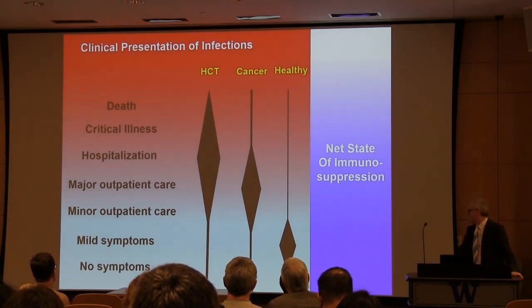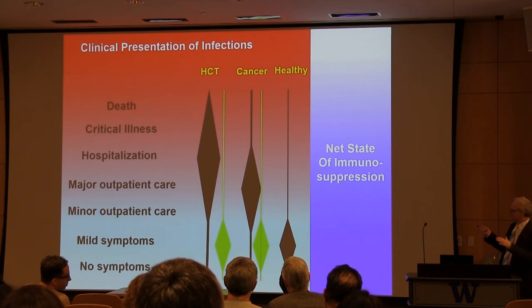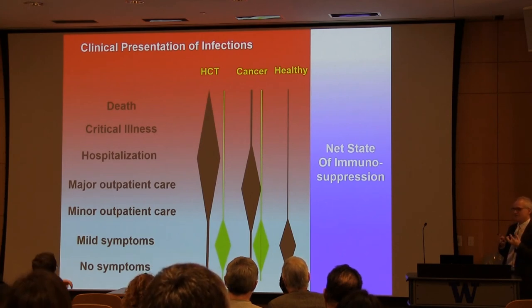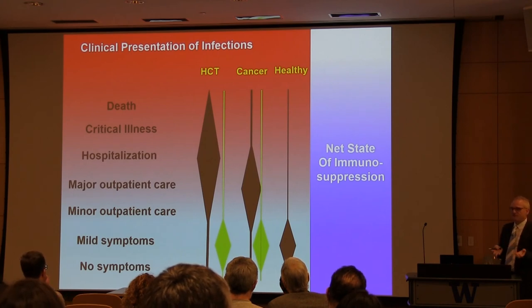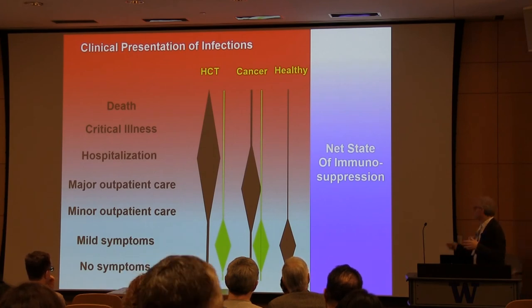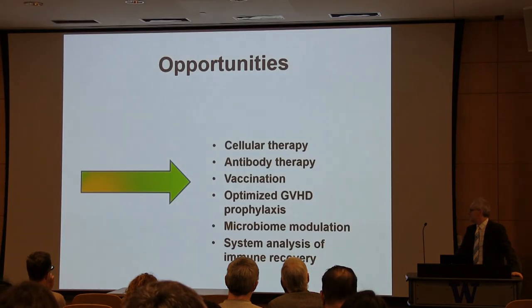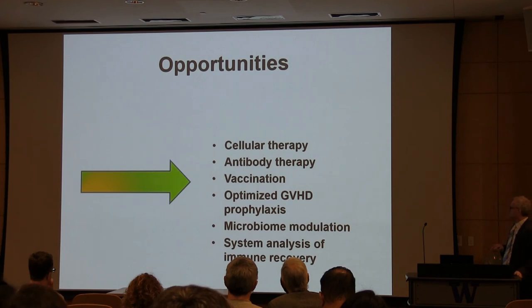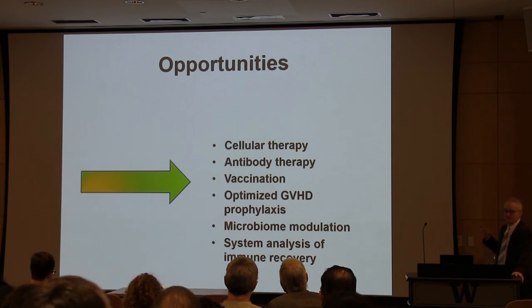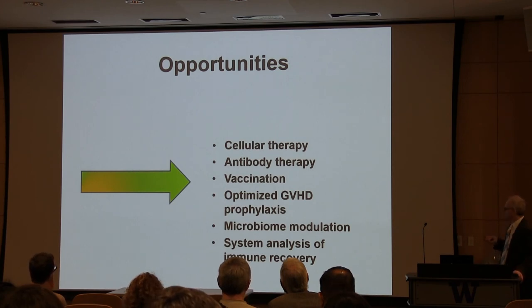One of the holy grails is to really move the net stage of immunosuppression down so that the host defense defect — the reason for all of this in the first place — is addressed. There is now enormous technology to assess the net stage of immunosuppression and then do something about it. Cellular therapy is an idea. Antibody therapy. Vaccinations — as we've seen for VZV with the first results — changed the dogma that you cannot vaccinate during the first three months of transplant.